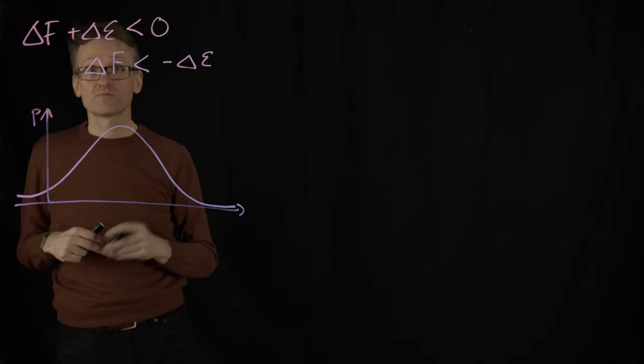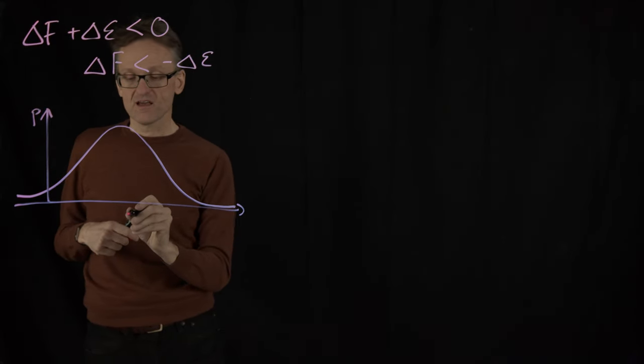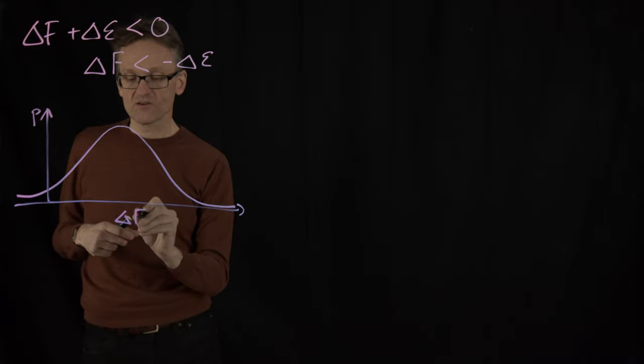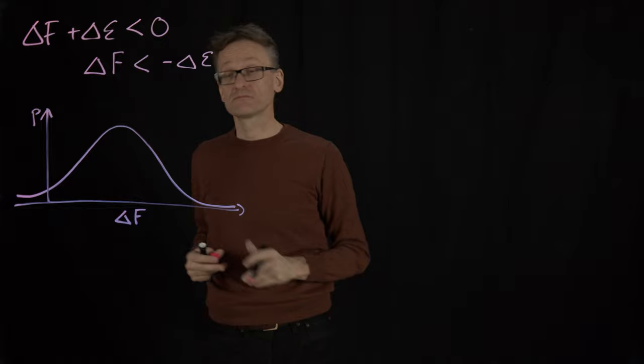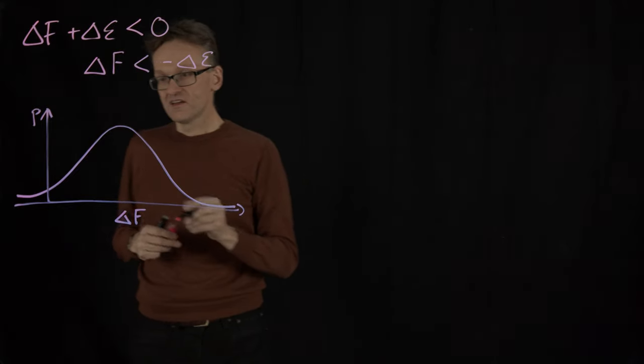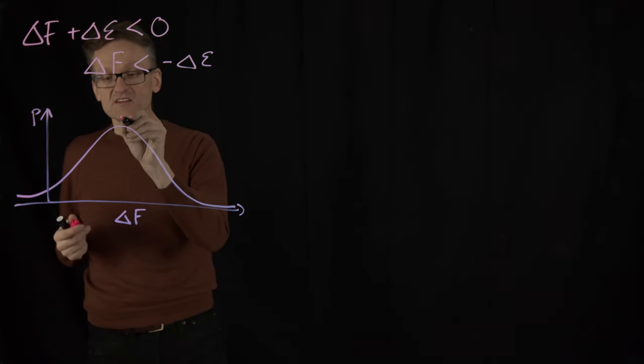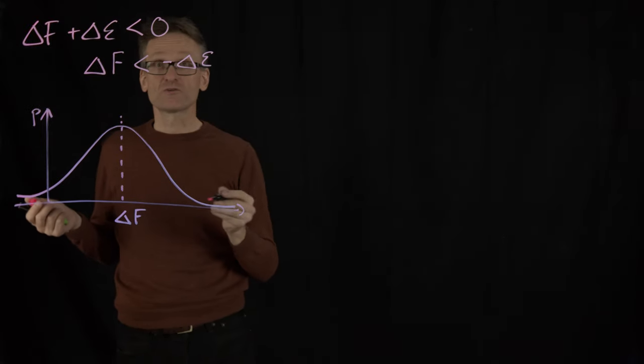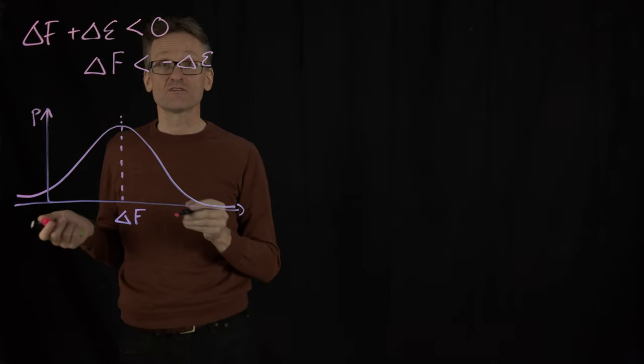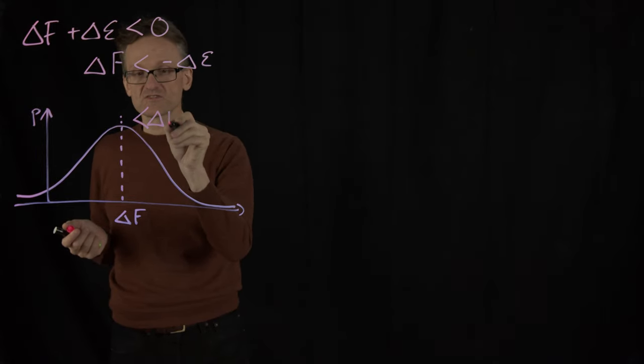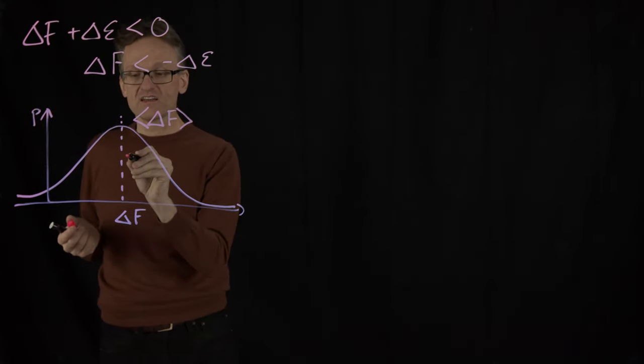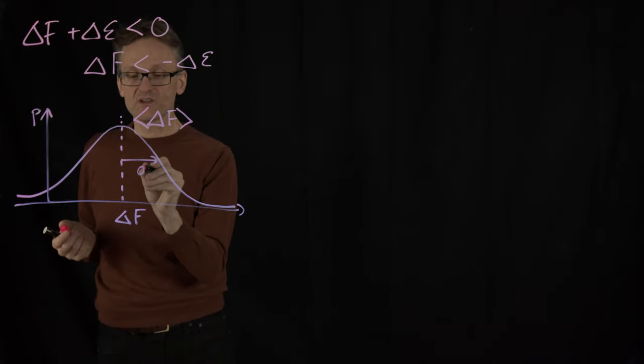The y-axis is probability density and here on the x-axis I have the energy of the rest of the chain. Again, I'm not really defining anything here beyond saying that any Gaussian will have an average, let's use angle brackets for that average, and I also have some sort of width sigma.